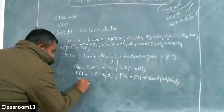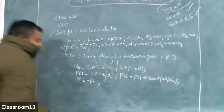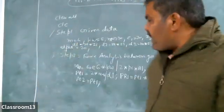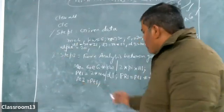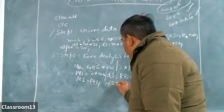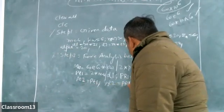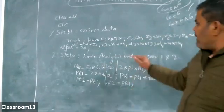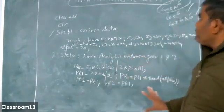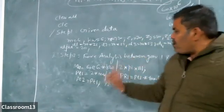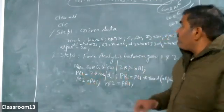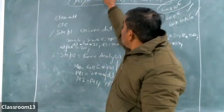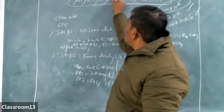Pt2 is equal to Pt1 because tangential forces are equal in magnitude but opposite in direction. Similarly, PR2 is equal to PR1. The force analysis part of gears 1 and 2 is completed. Pt1, Pt2, PR1, PR2 — these four we have calculated.